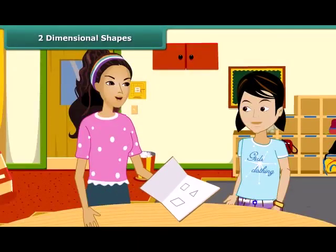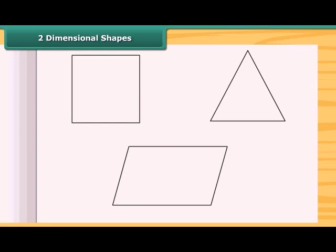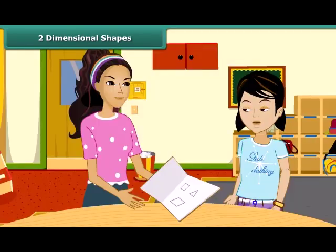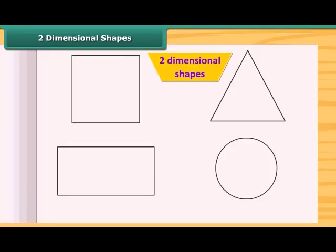Look at these shapes. These are all two-dimensional shapes. They have only two measurements, length and breadth. You mean all the shapes that we draw in our notebook are two-dimensional? Yes, you are right. All those shapes that we can draw on our paper and which have only two measurements are two-dimensional shapes.